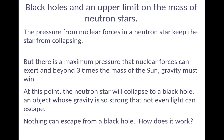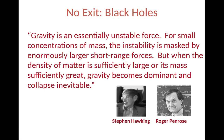Now let's talk about black holes. So the pressure from nuclear forces in a neutron star keeps the star from collapsing. But there is a maximum pressure that nuclear forces can exert. And beyond three times the mass of the sun, no matter what, gravity must win. So at this point, the neutron will collapse to form a black hole, an object whose gravity is so strong that not even light can escape. So nothing can escape from a black hole. Well, not quite nothing. We'll explain that later. Gravity is essentially an unstable force. For small concentration mass, the instability is masked by enormously large or short-range forces. But when the density of matter is sufficiently large or its mass is sufficiently great, gravity becomes dominant and collapse is inevitable.